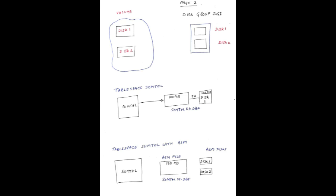In the case of ASM, we have many disks — it's called a disk group, or volume. Let's say we have two disks: disk 1 and disk 2, and we create a disk group. First, let us understand the purpose of ASM.